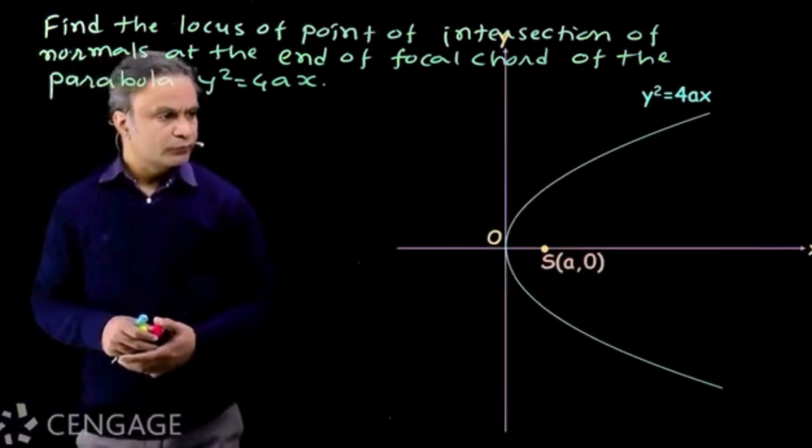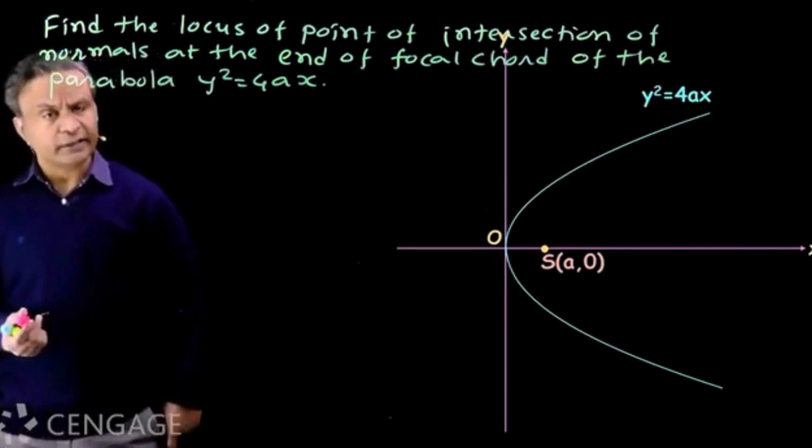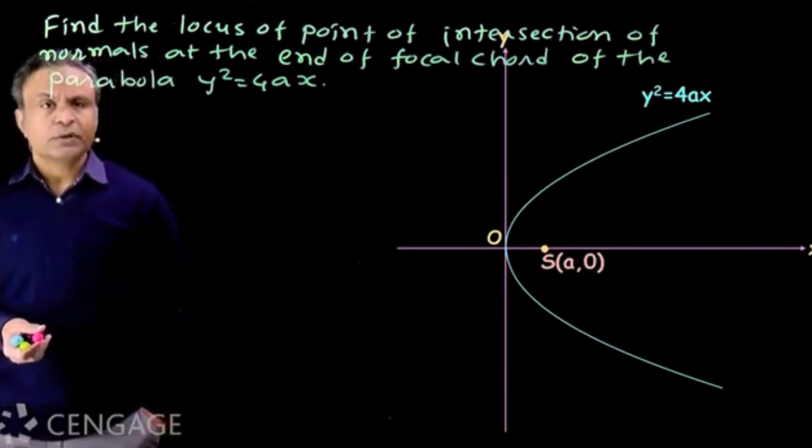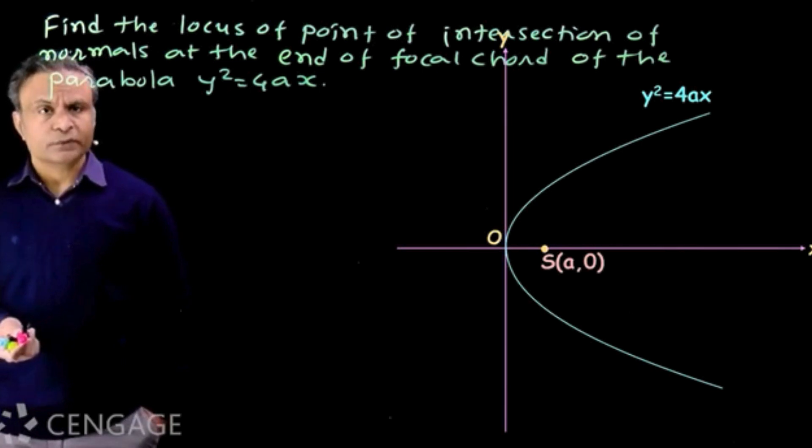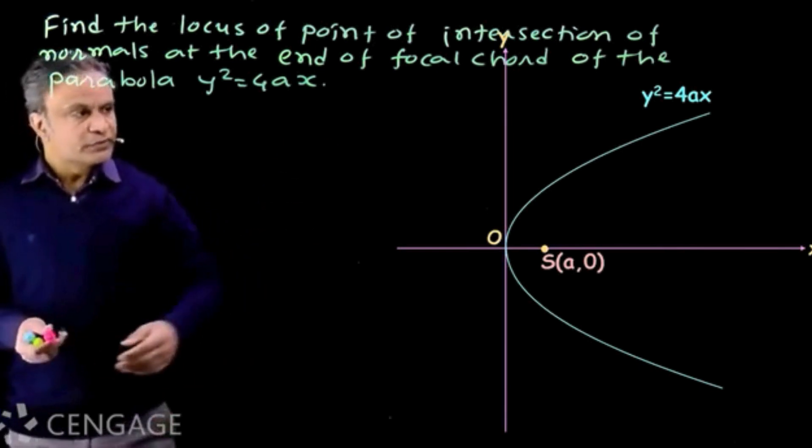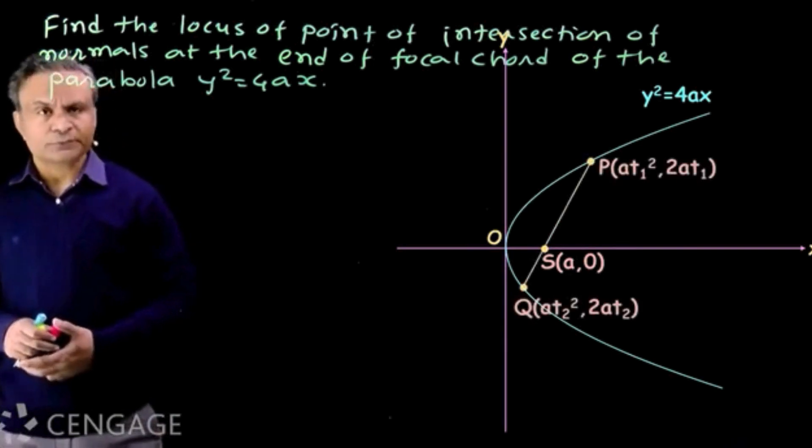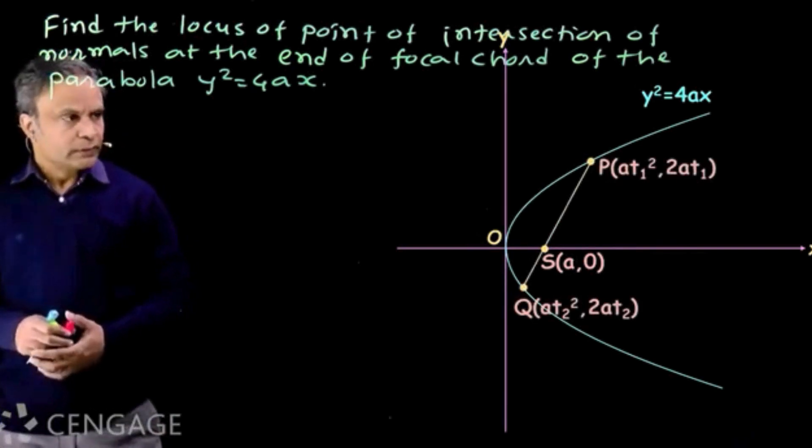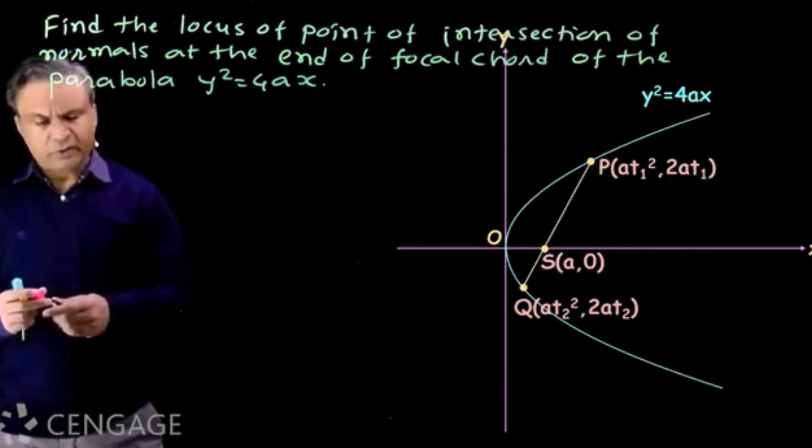We have graph of this parabola. Focus is point S with coordinates a comma zero. Now we can draw infinite number of chords to focus. These chords are called focal chords. Here PQ is one of the focal chords.